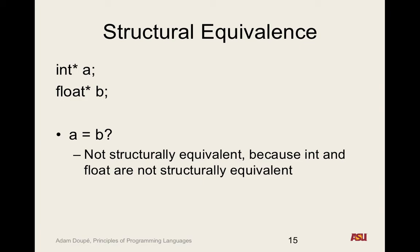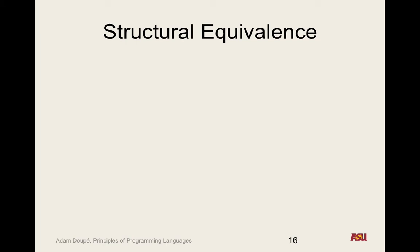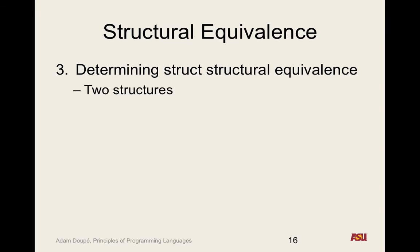Rule three: structs. How do we define two structures as structurally equivalent? Their members must have the same types in the same order. The names of the fields don't matter at all — only the order of the types. This is a historical artifact; records originally had no field names, just offsets. Also, in a low-level language like C, a structure is literally contiguous bytes in memory, so copying one structure to another is just copying that chunk of memory.